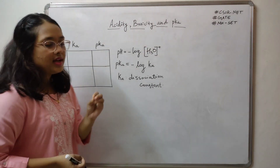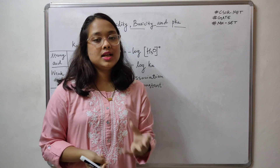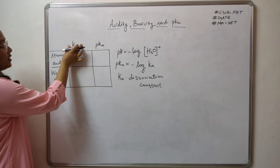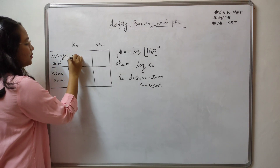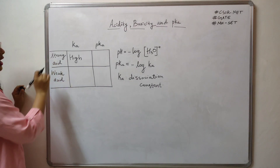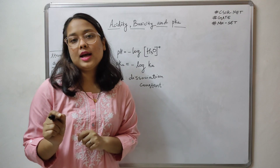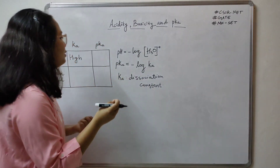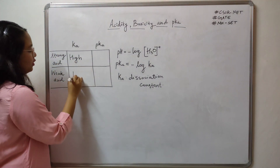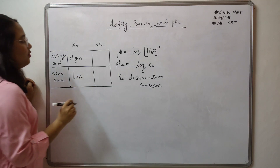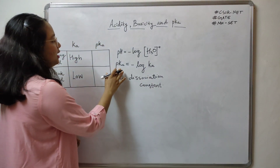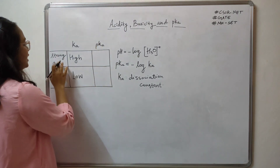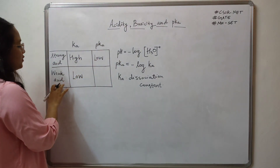When we talk about a strong acid, strong acids undergo complete dissociation in aqueous medium, so the dissociation constant ka is very high. For a weak acid, ionization is barely minimum, so ka is low. Because pKa is the negative log of ka, the opposite holds: if ka increases, pKa decreases. So pKa for a strong acid is low and pKa for a weak acid is high.